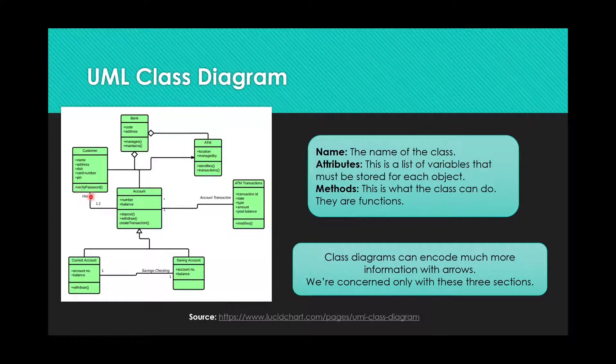For example, a customer can verify password. An account has a withdraw method. Class diagrams can be really detailed and show lots of interesting information about how these things are related with arrows. Right now, we're only concerned with the name, the list of attributes, and the list of methods.